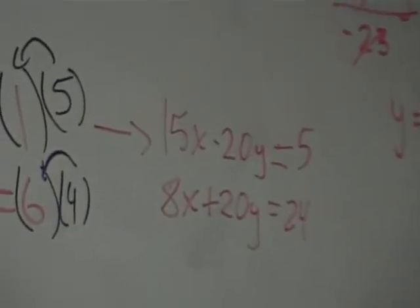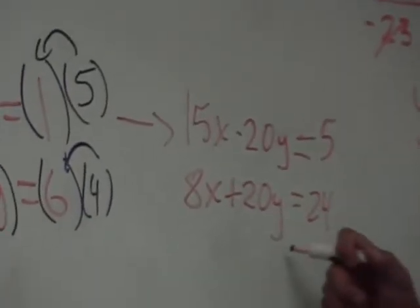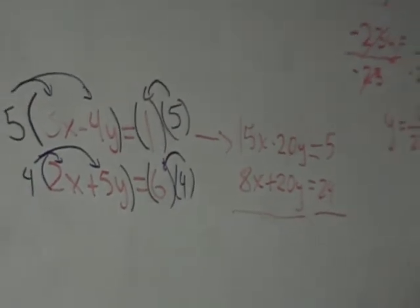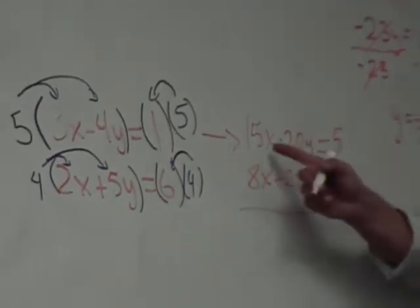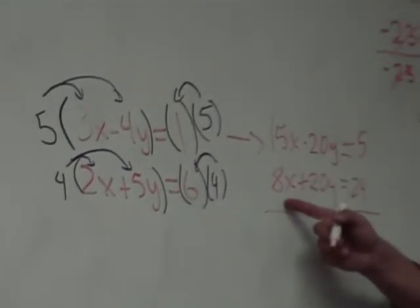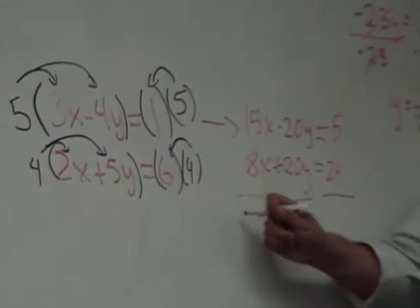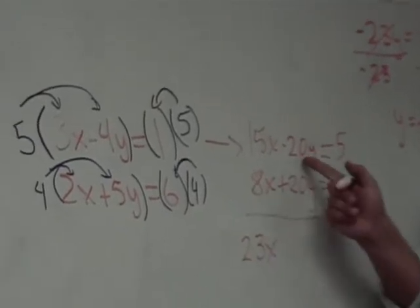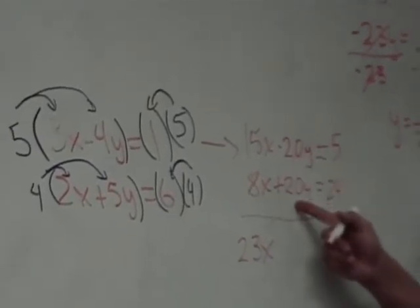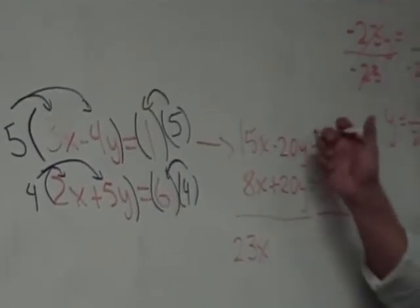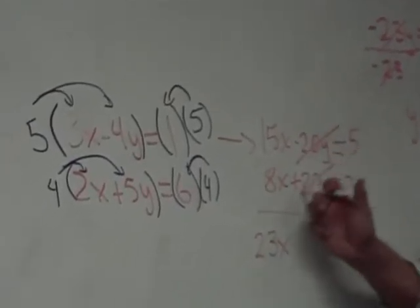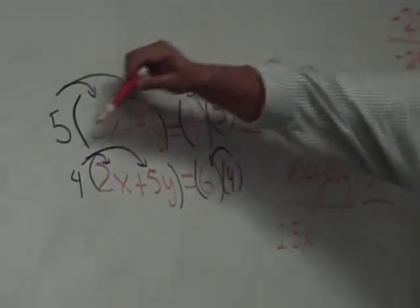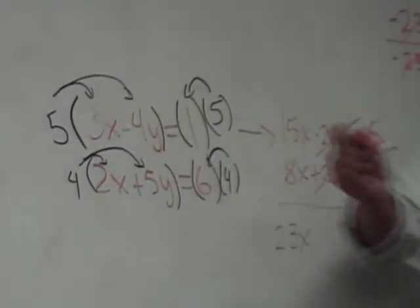See that? And then you add your two equations. What is 15x plus 8x? 23x. 20y minus 20y—they cancel. Not by chance: you made it happen when you made that selection.